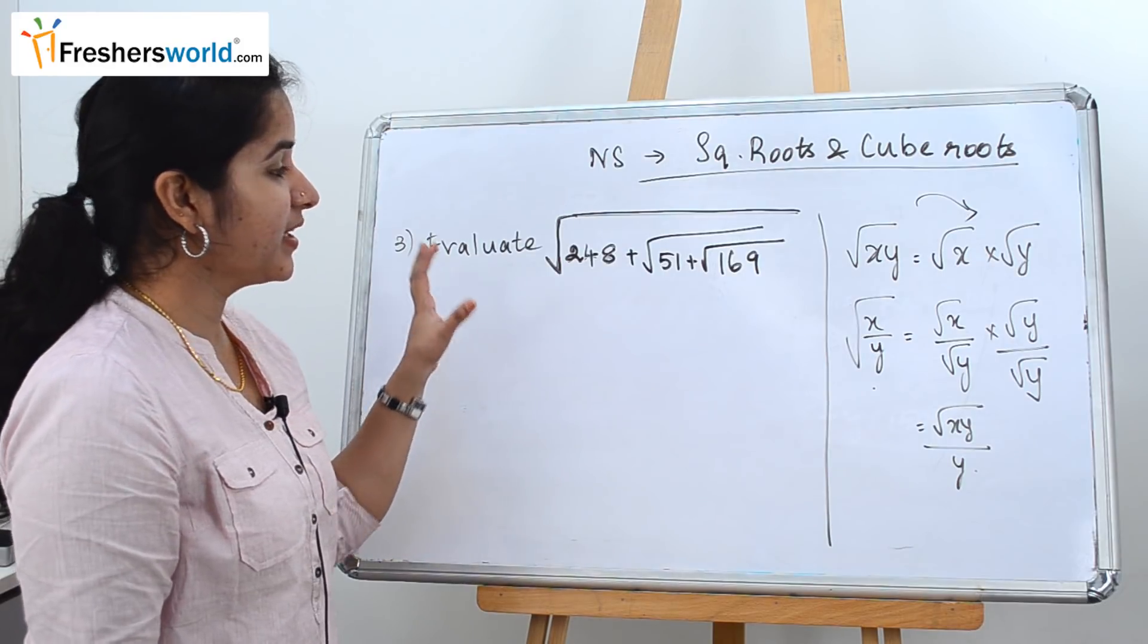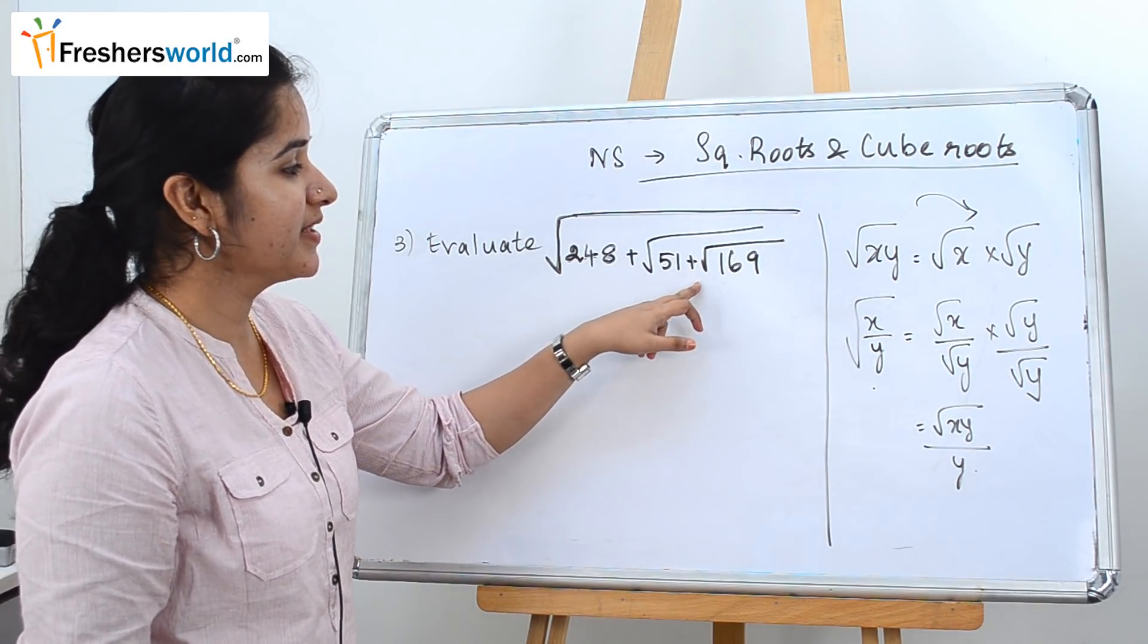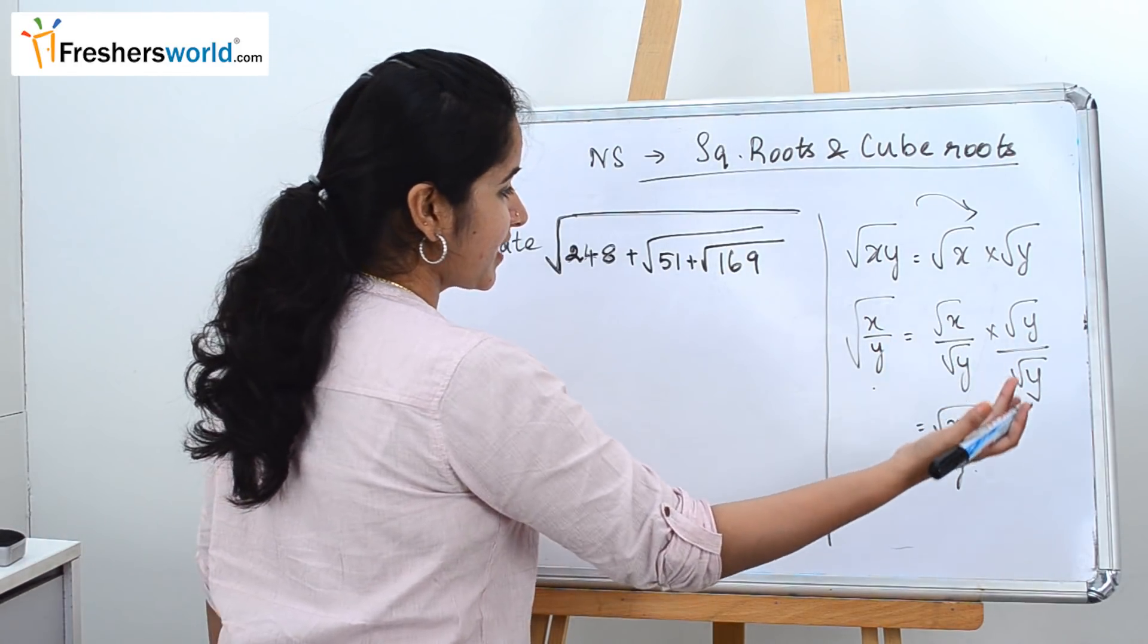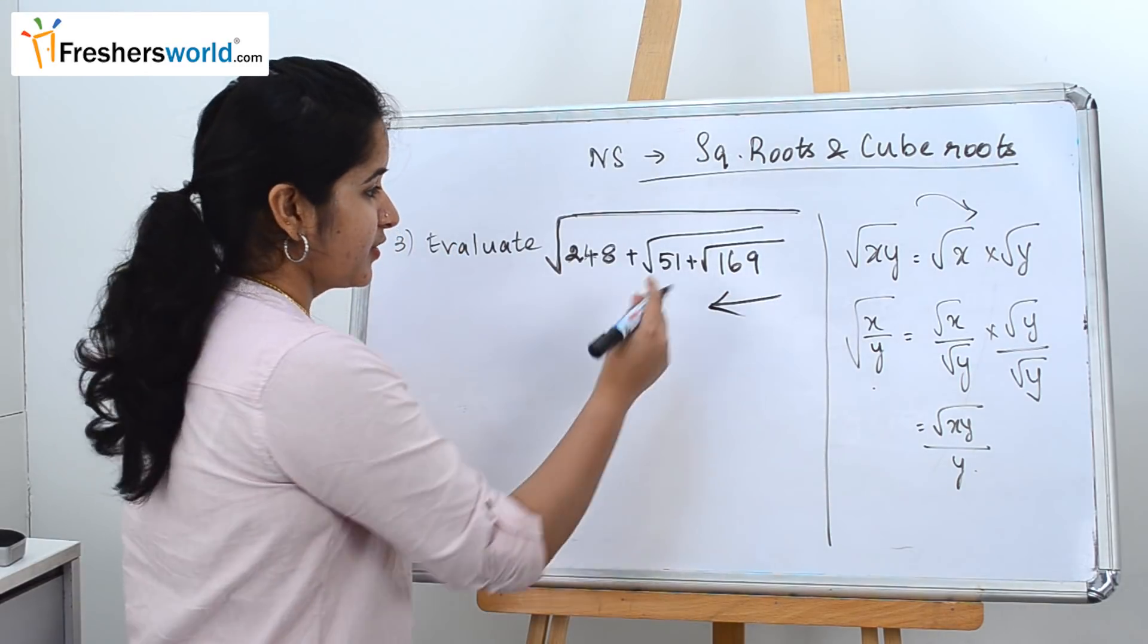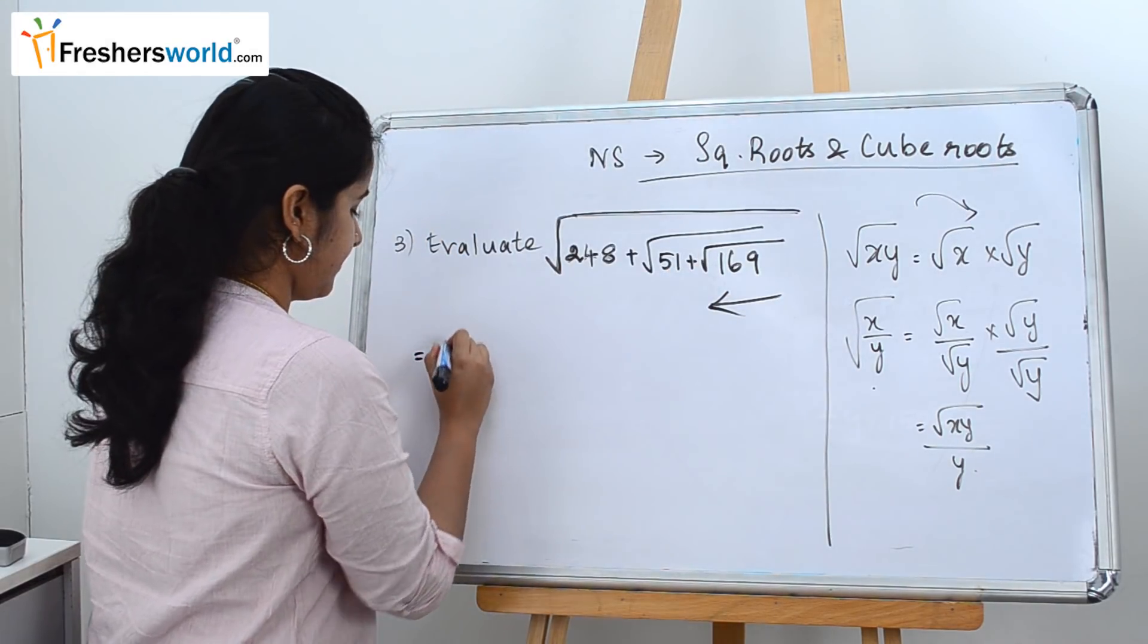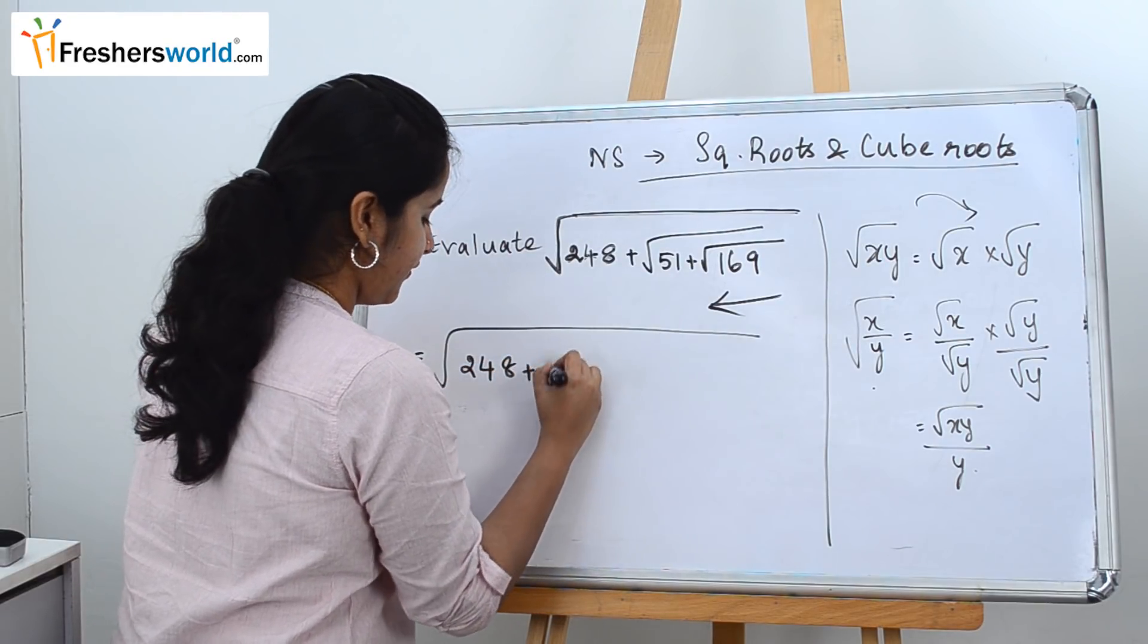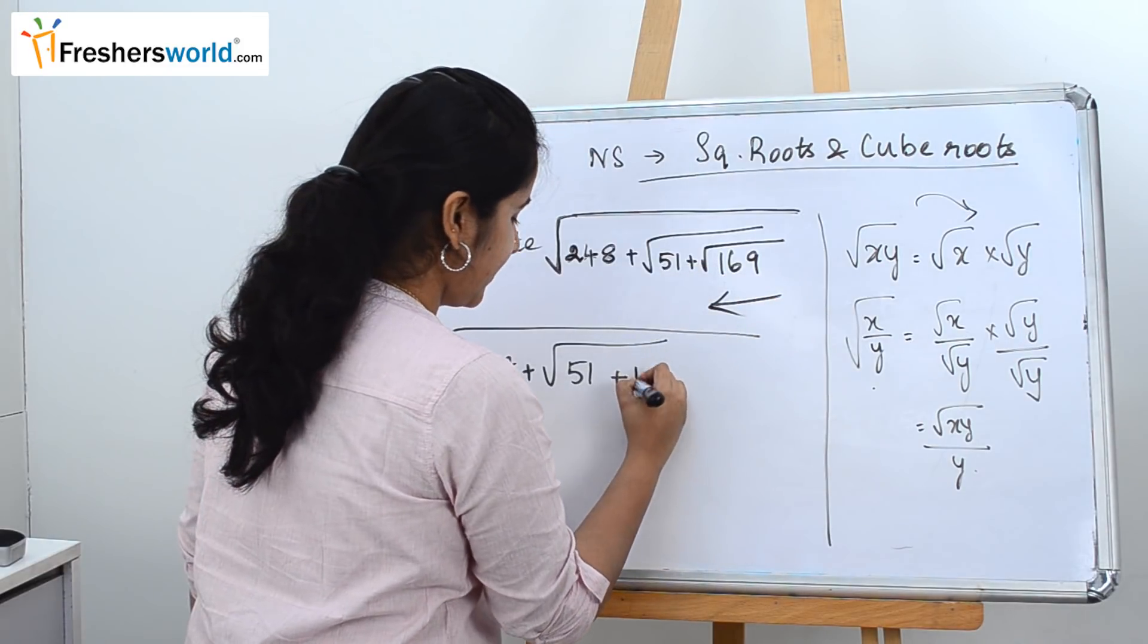The next question is evaluate the square root of 248 plus the square root of 51 plus 169. So how do we do it? Always remember you have to start it from your right-hand side and go towards your left to solve this. So first, 248 write it as such, plus 51 also write it as such, plus root of 169 is nothing but 13.